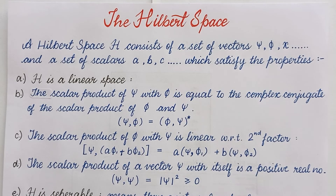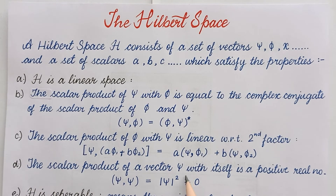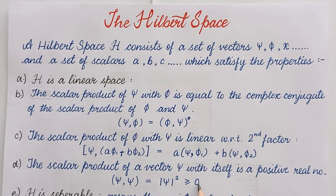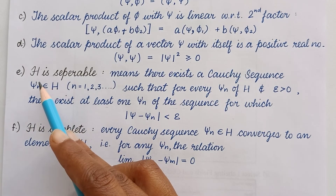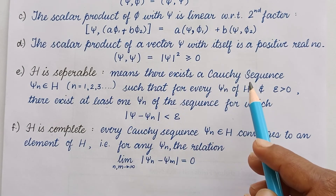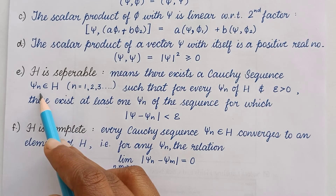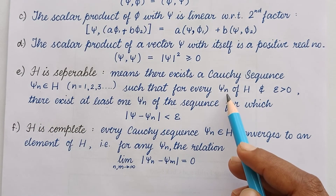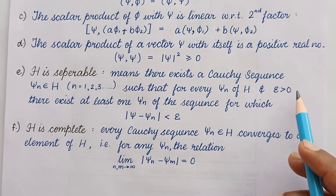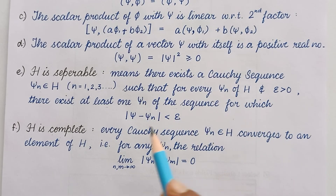The fourth property: the scalar product of a vector psi with itself is a positive real number. If we operate psi with itself — psi comma psi — it equals the mod square of psi, which is always greater than or equal to zero. It equals zero only when psi is zero; otherwise it is a positive real number. The fifth property: H is separable, meaning there exists a Cauchy sequence psi-n belonging to H where n equals 1, 2, 3, such that for every psi in H and epsilon greater than zero, there exists at least one psi-n of the sequence for which the norm of psi minus psi-n is less than epsilon.